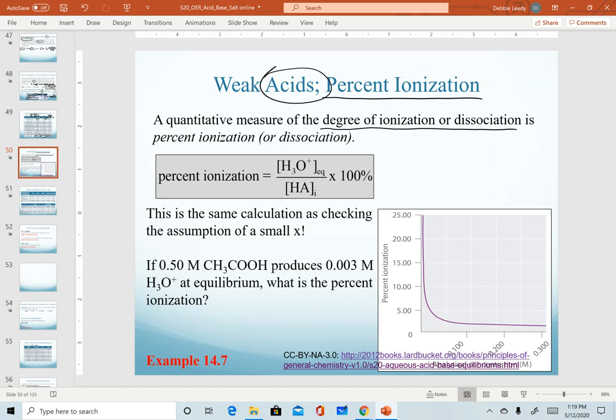Again, this is for acids. Our calculation would be how much hydronium concentration we get at equilibrium divided by our initial acid concentration multiplied by 100. Hopefully you recognize that this is the exact same calculation we use to check our assumption when we assume that we have a small x.